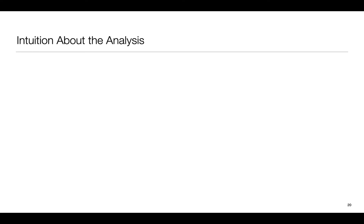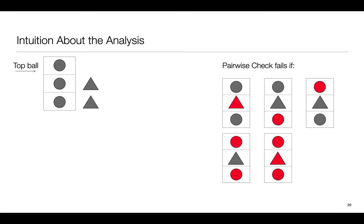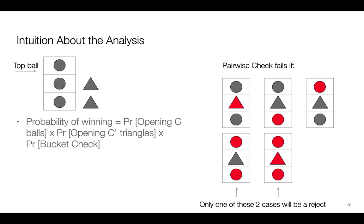So, to recap, this is what a bucket of size 3 would look like. It has 3 balls and needs 2 triangles for the check. We reject if any of the following configurations of balls and triangles occur. The probability of the adversary winning the game is the probability that the adversary goes undetected when we open C balls and C' triangles, multiplied with the probability that the adversary passes the bucket check protocol.